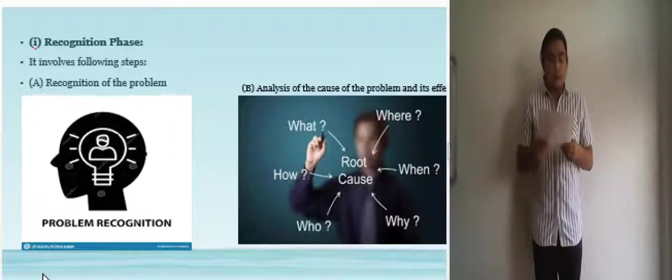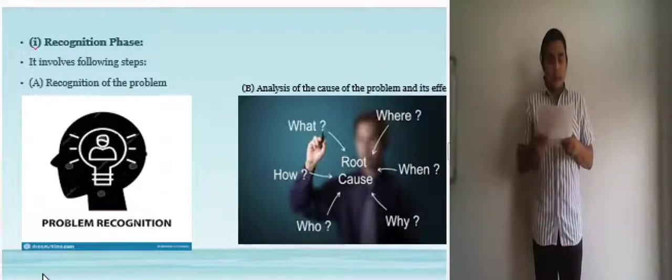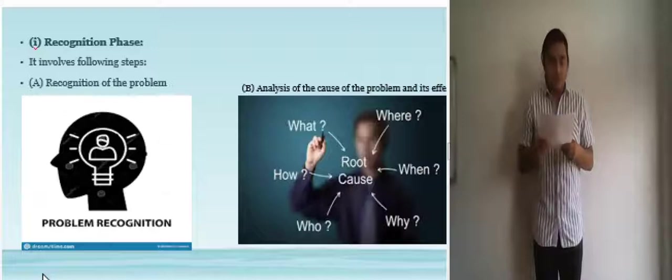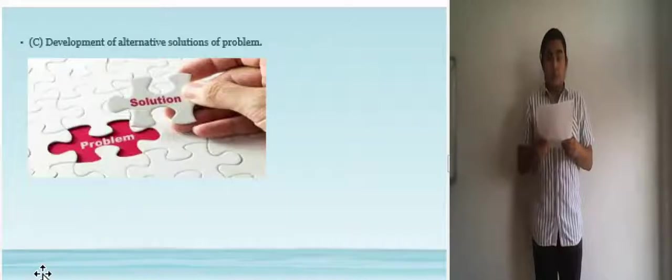Second one is the analysis of the cause of the problem and its effect. Analyze thoroughly the problem at hand. Where did it come from? What are the possible reasons why such problems occurred? And if then identified, would removing what caused it remove the problem or make it worse? How big of a damage does its effect do? Are there more problems to arise if not given attention immediately? The last one is to develop alternative solutions for problems. Develop solutions that are economical and can be adapted by the locals for future improvements.